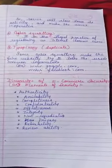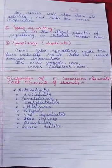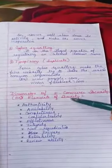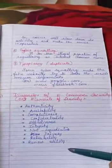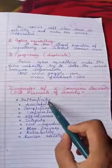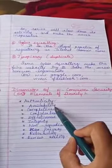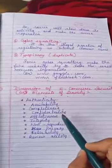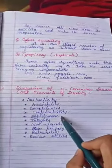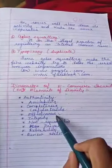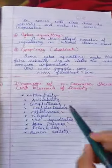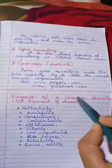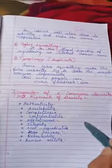What are the dimensions of e-commerce security? These are the elements included in security to avoid threats. First, the security system has to be authentic. The security system has to provide availability and completeness, confidentiality, effectiveness, integrity, non-repudiation, privacy, reliability, and reviewability. These are the facilities that security systems should surely have.